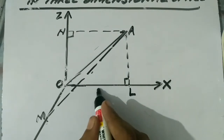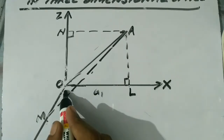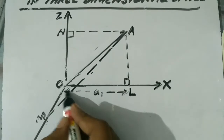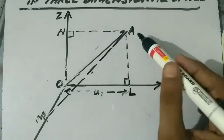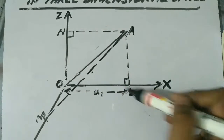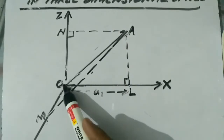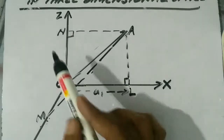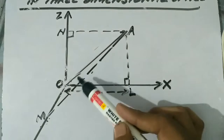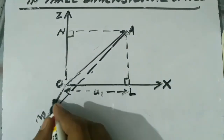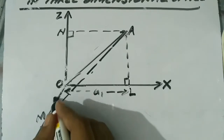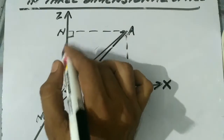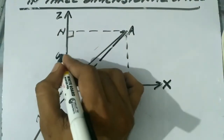Let the distance OL be A1. So A1 is said to be the projection of OA on the x-axis. Similarly, OM and ON are the projections on the y-axis and z-axis respectively. The length of OM is A2 and the length of ON is A3.